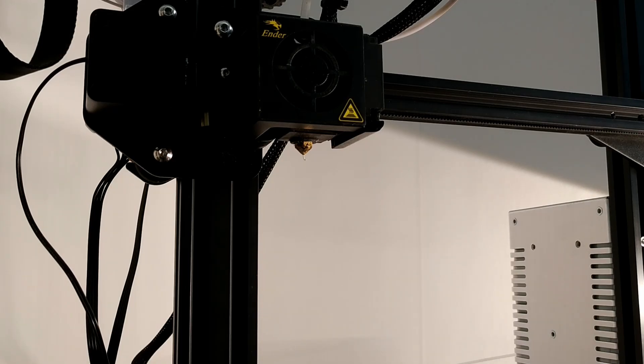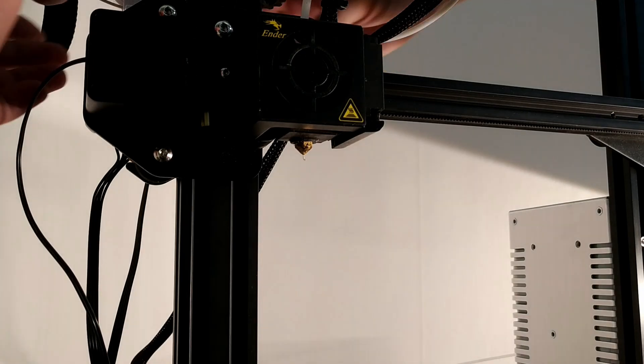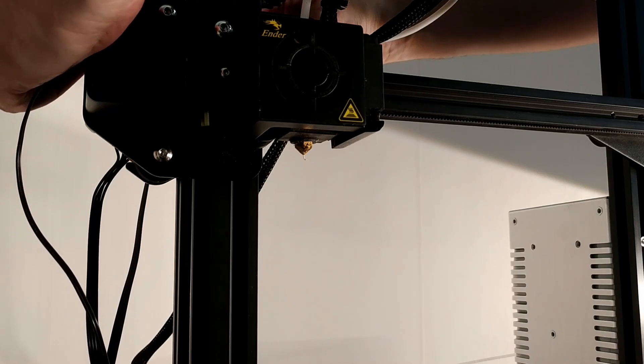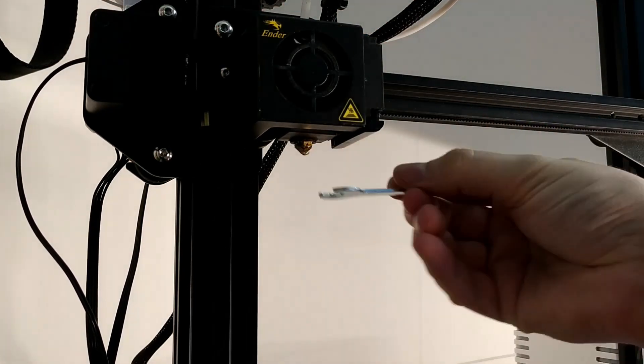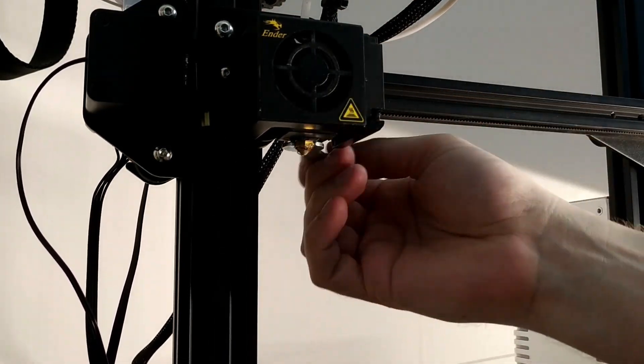So the first thing you need to do is set the nozzle temperature for 200 degrees. You raise the z-axis to get a better view and working space. You pull the filament back a little bit. You unscrew the nozzle using a tool that probably was included with the printer.